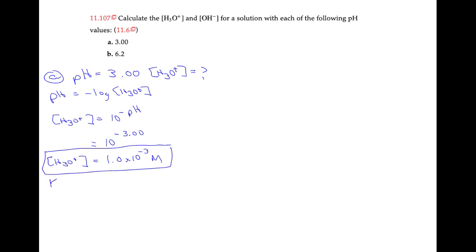Then we can use the formula Kw, which is equal to 1 times 10 to the negative 14.00, is equal to the concentration of hydronium times the concentration of hydroxide. So rearranging this formula, I get that the concentration of hydroxide is going to be equal to Kw divided by the concentration of my hydronium.